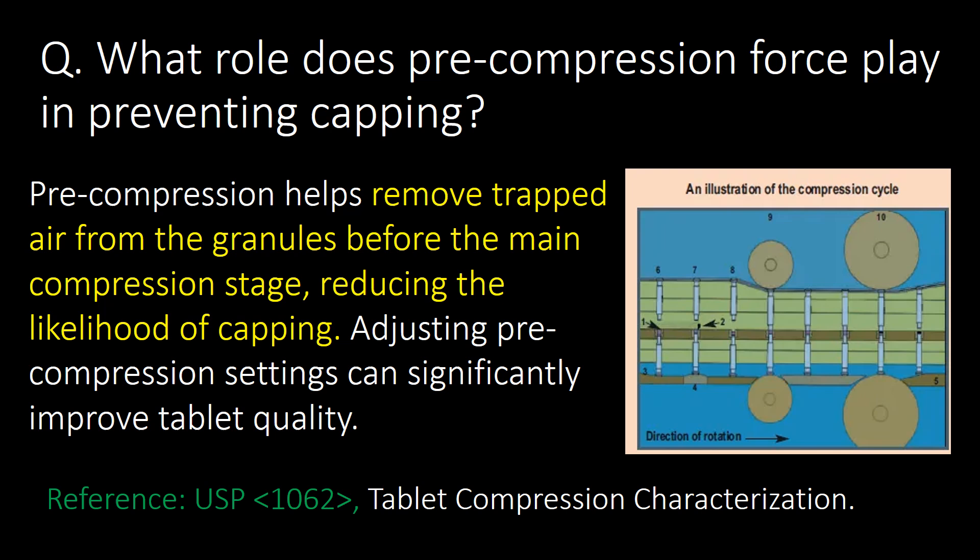What role does pre-compression force play in preventing capping? Pre-compression helps to remove trapped air from the granules before the main compression stage, reducing the likelihood or probability of capping. Reference: USP Chapter No. 1062.